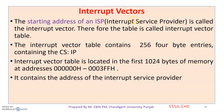If you have an interrupt vector, this is the Interrupt Service Routine. If you have a starting address, it is called the interrupt vector. The ISR starting address is the interrupt vector. Therefore, the table is called the Interrupt Vector Table — that is why we call it the Interrupt Vector Table.